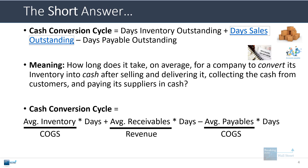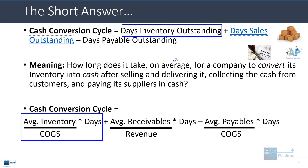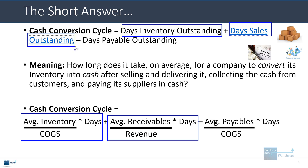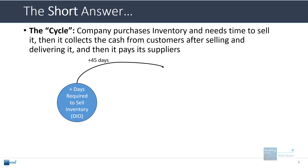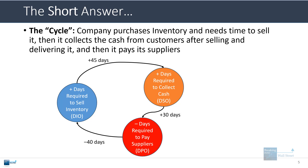You can also write it like this: take the company's average inventory divided by its cost of goods sold and multiply by the days in the period — that gives you days inventory outstanding. Then take average accounts receivable divided by revenue and multiply by days in the period — that gives you days sales outstanding. Subtract average accounts payable divided by COGS and multiply by days — that gives you days payable outstanding. For example: 45 days to sell inventory, plus 30 days to collect cash, minus 40 days to pay suppliers, equals 35 days for the cash conversion cycle.